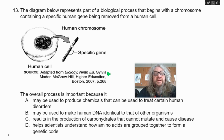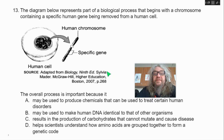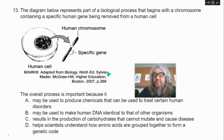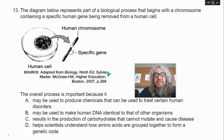Thirteen. The diagram below represents part of a biological process that begins with a chromosome containing a specific human gene being removed from a human cell. The overall process is important because — A, it may be used to produce chemicals that can be used to treat certain human disorders; B, it may be used to make human DNA identical to that of other organisms; C, it results in the production of carbohydrates that cannot mutate and cause disease; D, it helps scientists understand how amino acids are grouped together to form a genetic code.